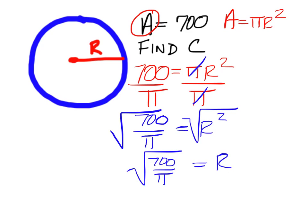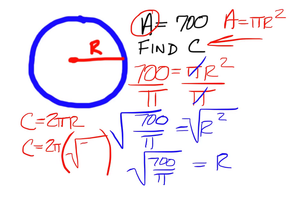Like we said before, you have to go in and use the circumference formula now, because that's what you're finding. You're finding C, circumference. So it's circumference equals 2 pi, and where you see the r, dump in the square root of 700 over pi.